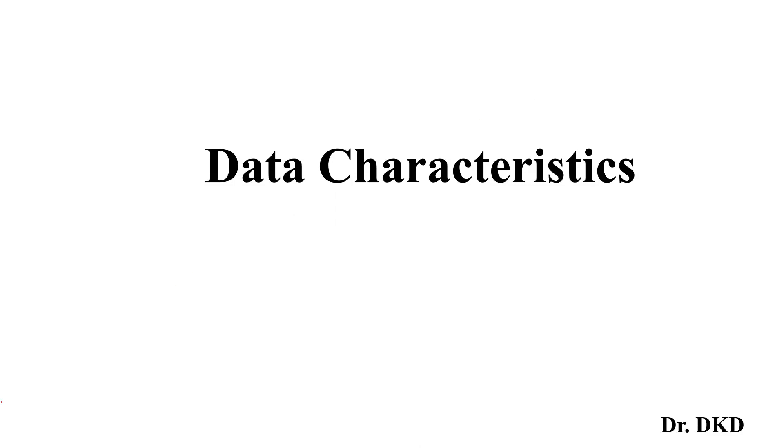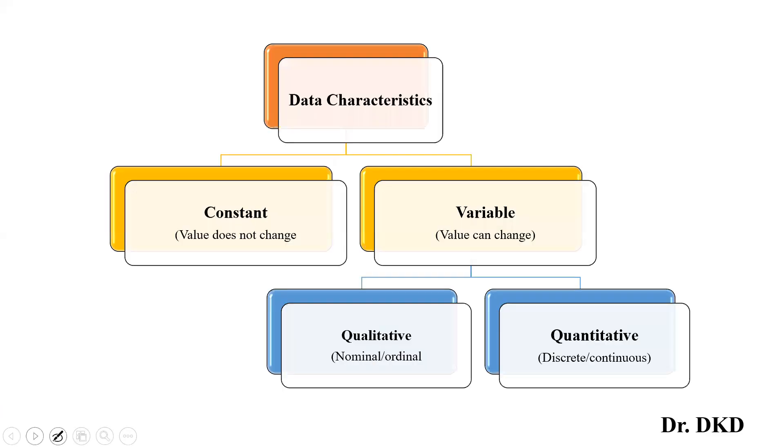Data characteristics is very important to understand to draw the conclusion of the particular research objective. So data characteristics basically divided in two parts. First one is a constant and second is variable.